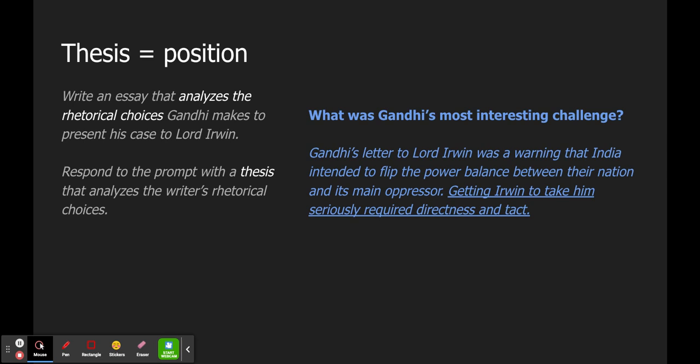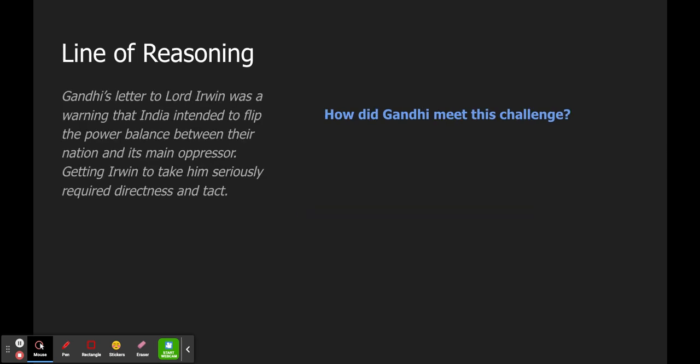You, by the way, will not find directness and tact in a glossary of rhetorical strategies in the back of your textbook. These are simple decisions or choices that I see Gandhi making in order to get Irwin to take him seriously. Directness and tact. I'm on my way. Now, how did he do it? So there's my introduction, right? And my central claim. Getting Irwin to take him seriously required directness and tact.